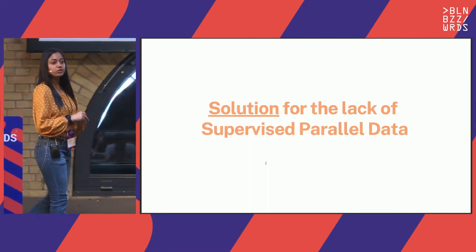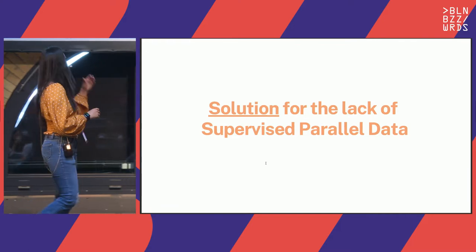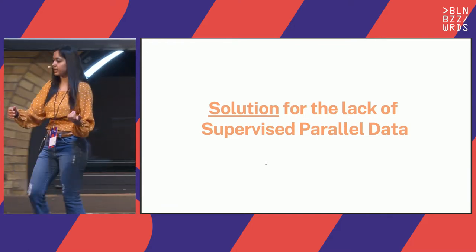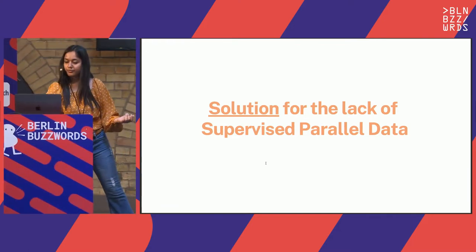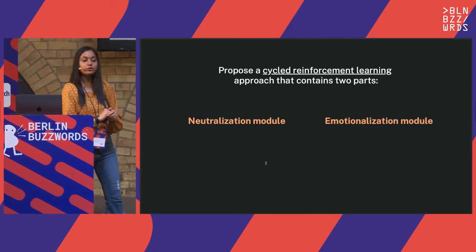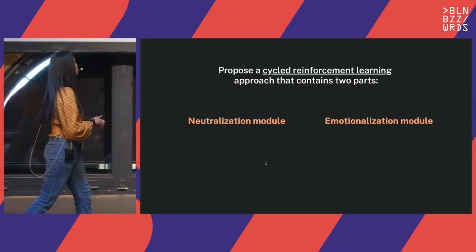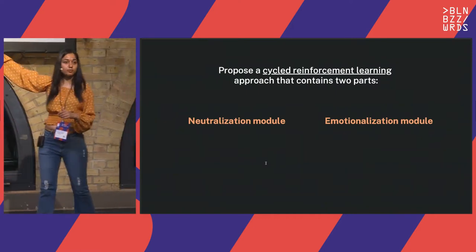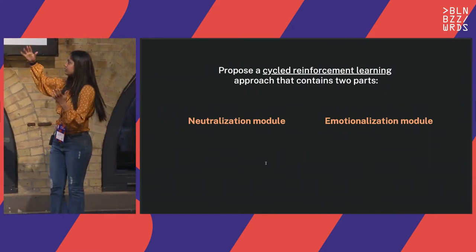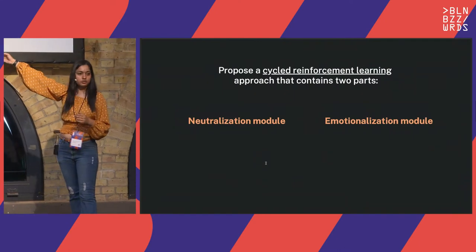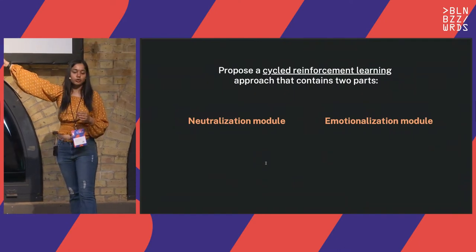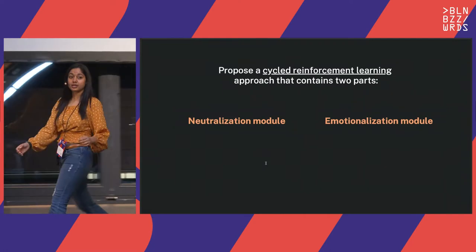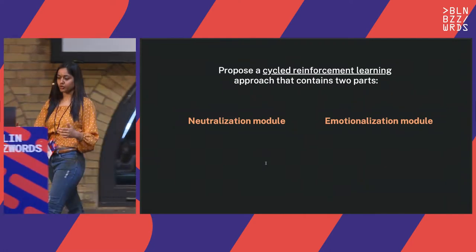To find the supervised parallel data, we use a cycle reinforcement learning approach that consists of two major paths: the neutralization module and the emotionalization module. We will see how each module works.